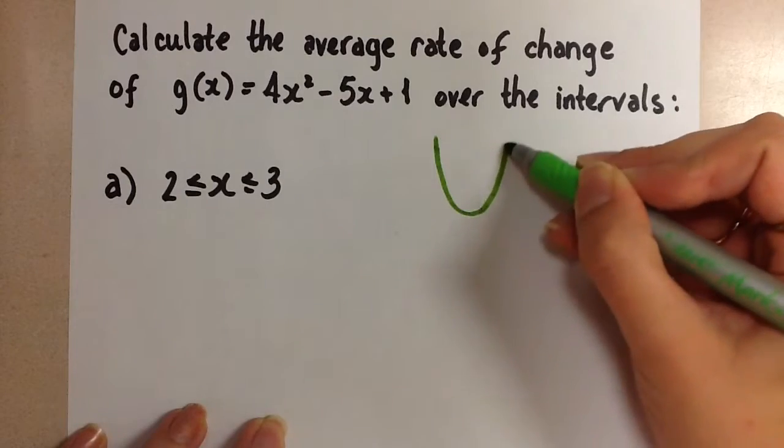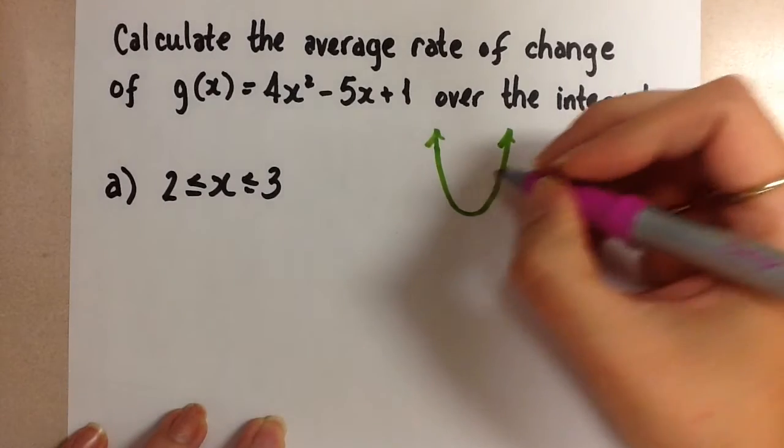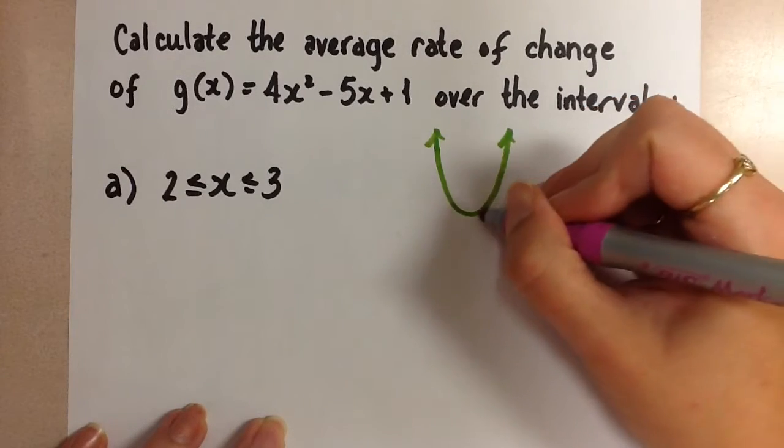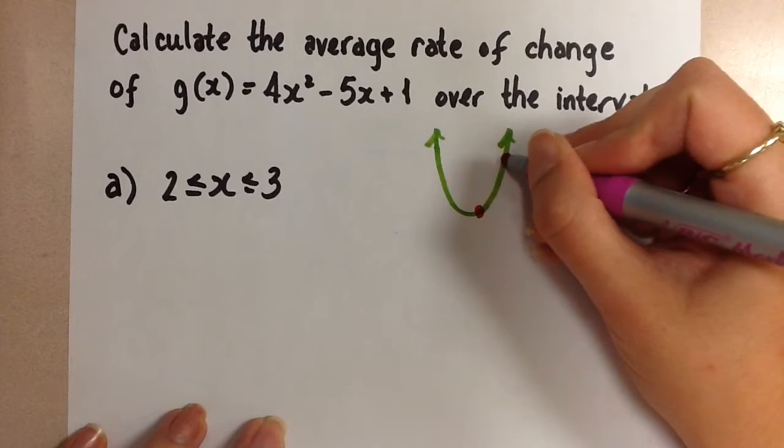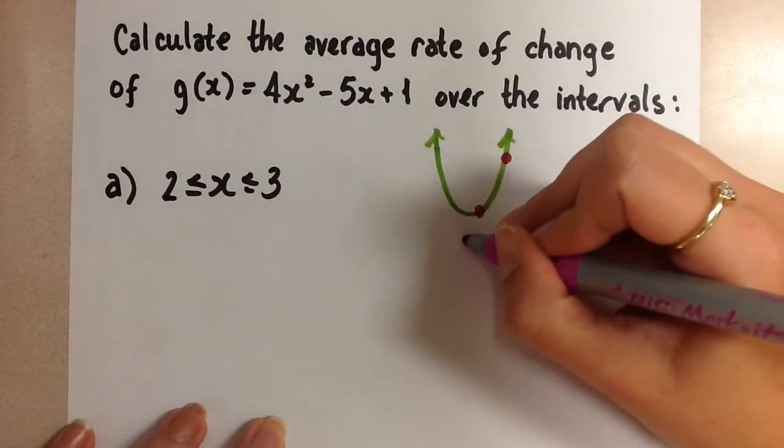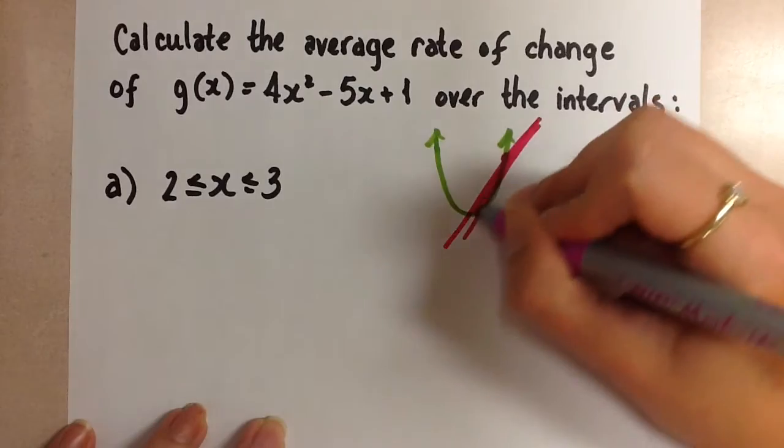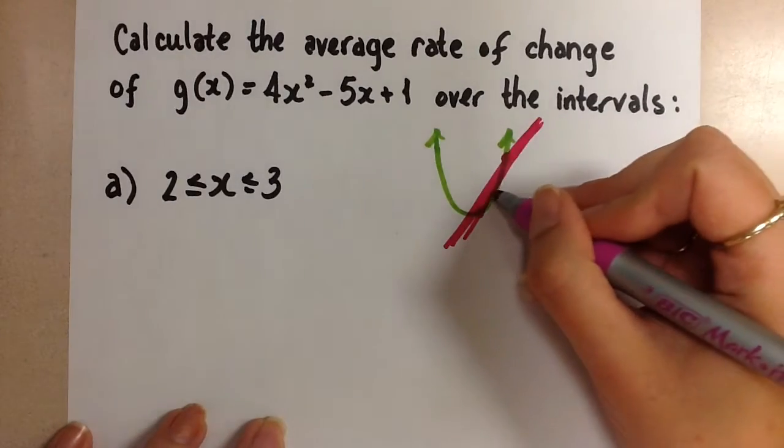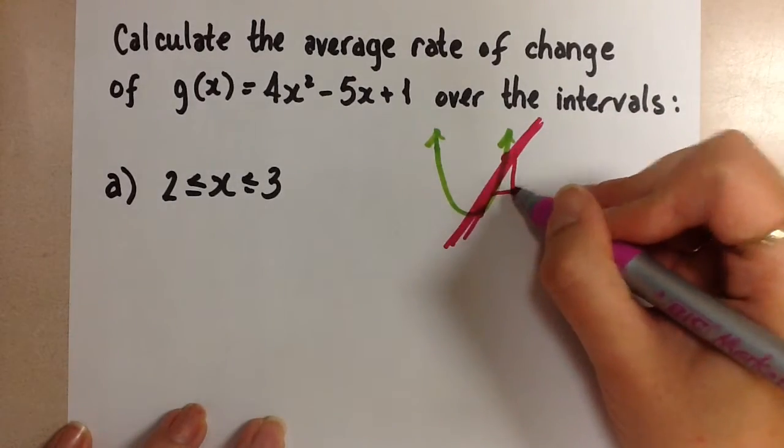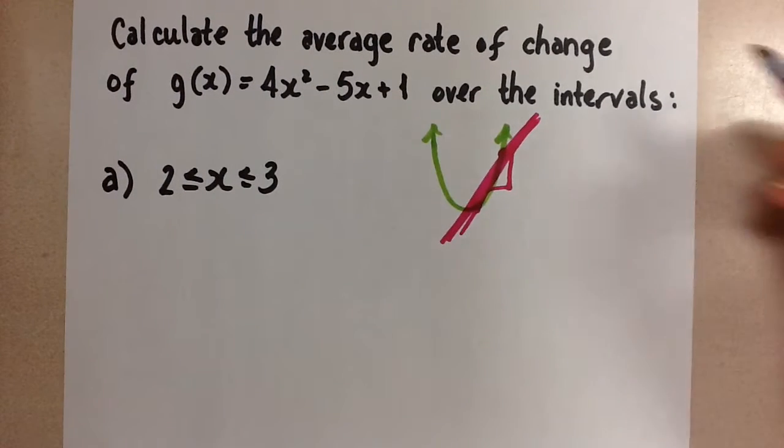So for instance if we have this kind of a parabola and we choose two points here and here, and we want to find the average rate of change between those two points, we would draw a straight line between those two points and we would find the slope of that straight line. That would give us the average rate of change between the two points, which is the rate of change of that interval.